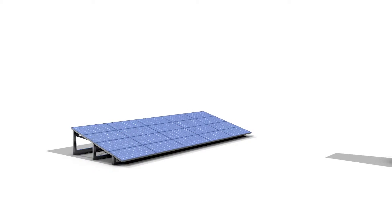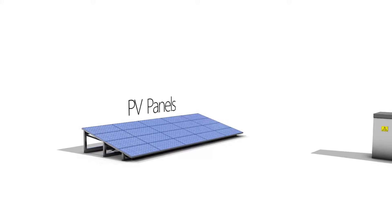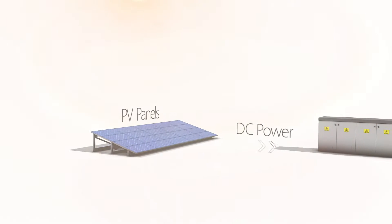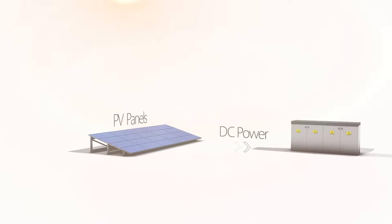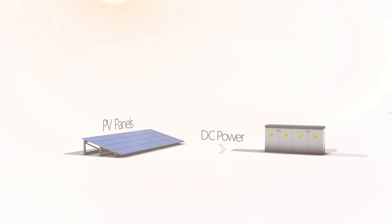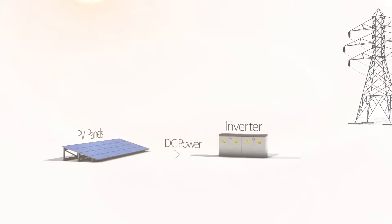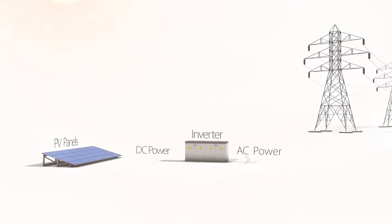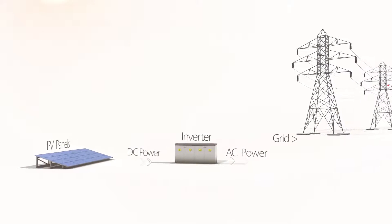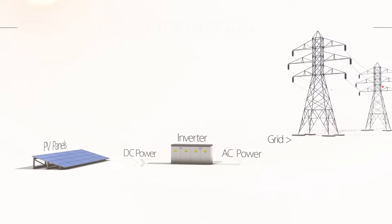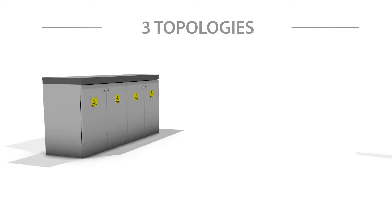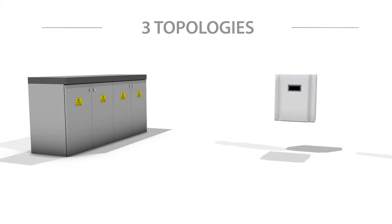A photovoltaic system is made up of panels which produce DC power when exposed to sunlight, and an inverter which converts the DC power into AC power that is fed into the utility grid. In commercial rooftop and ground mount PV systems, there are three different inverter topologies.